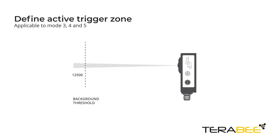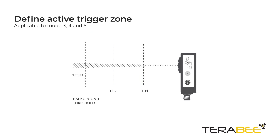Users can also program the sensor to trigger an output when an object is detected between threshold 1 and 2.